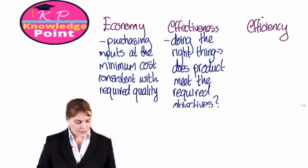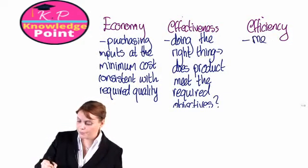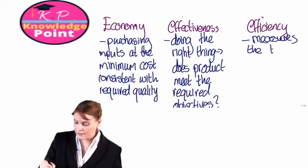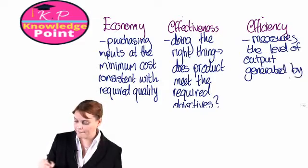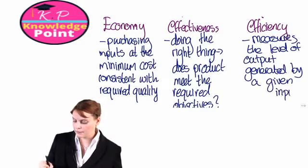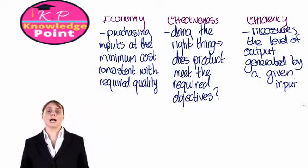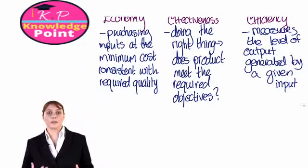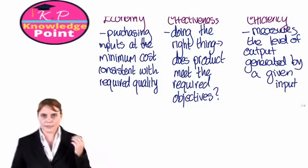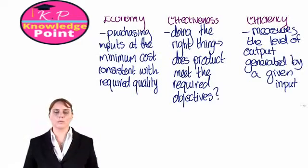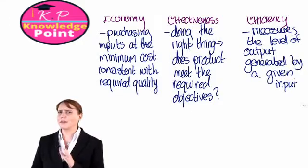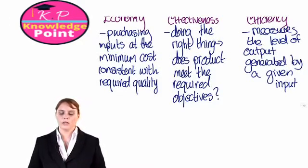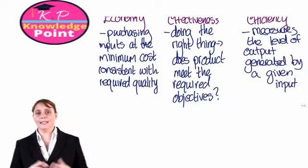Our third E is efficiency. This relates to, or measures, the level of output generated by a given input. We want to maximize our outputs from a particular input. For example, if we think about a manufacturing organization and our production line worker, we want to maximize the output from that one production line worker, who is our input or resource into the production process — but without damaging staff motivation. We want to maximize the level of output from a number of given inputs.